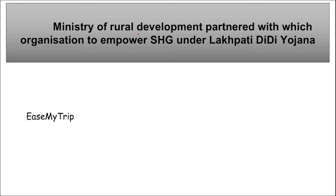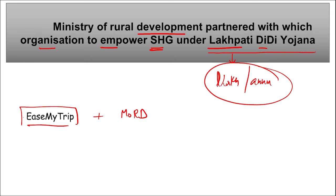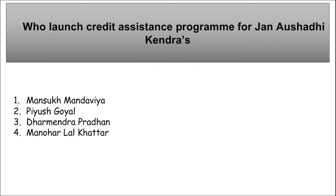Ease My Trip partnered with the Ministry of Rural Development to empower self-help groups under the Lakhpati Didi Yojana. The main aim of this scheme is to help women achieve ₹1 lakh of income annually. This partnership will help SHG women achieve the target of earning ₹1 lakh per year.